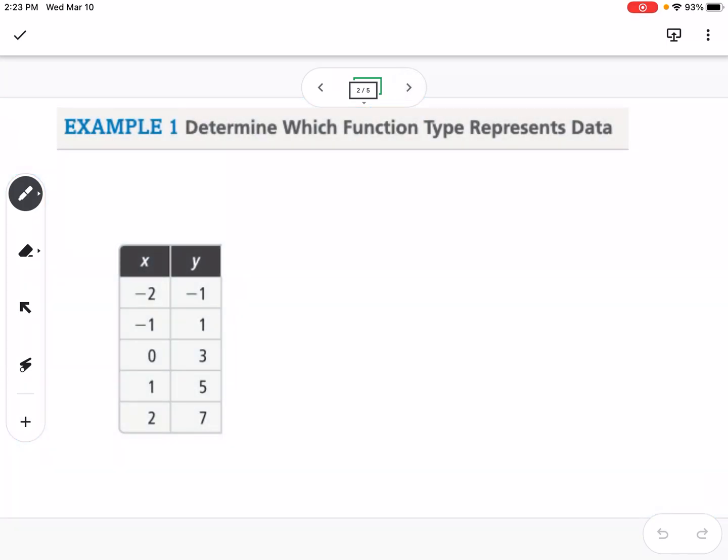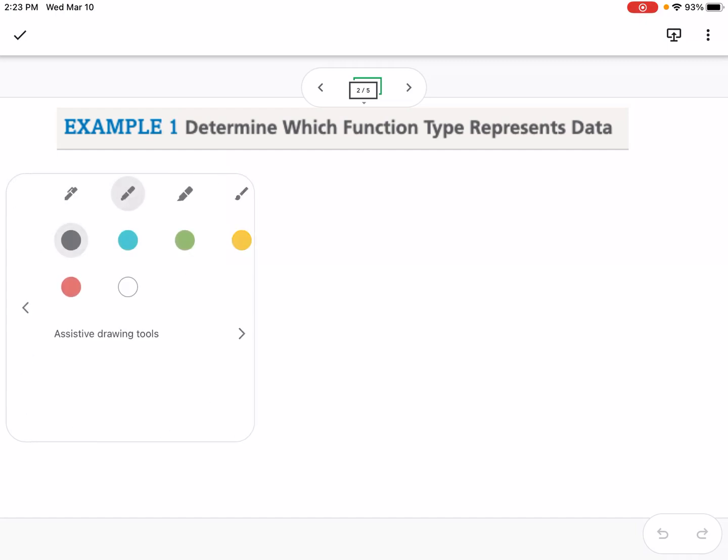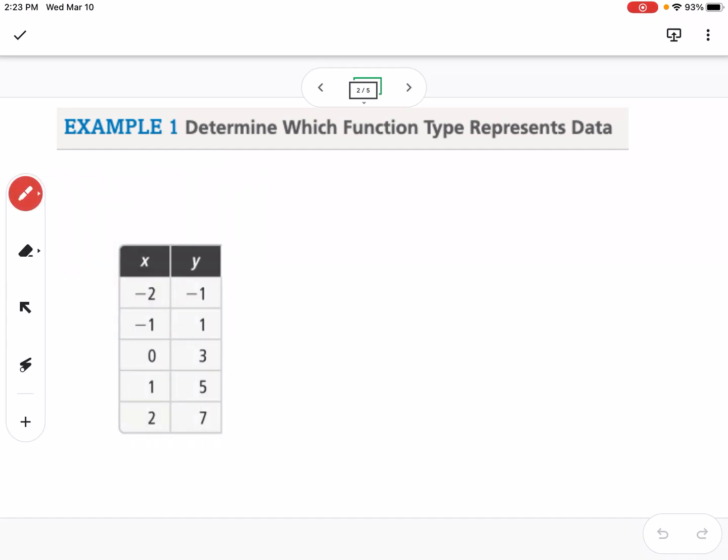Example one is, from a table, determine which function type represents the data. So the first thing that we're going to look for is the first differences. So you're going to make sure for the x's that you're going up by 1 each time, which we are.